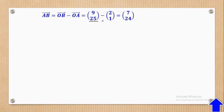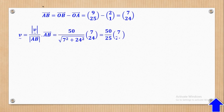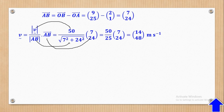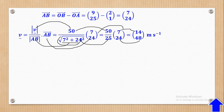AB equals OB minus OA. OB was (9, 25) and OA was (2, 1), so subtracting: 9 minus 2 gives 7, and 25 minus 1 gives 24. Now with direction vector (7, 24), we convert magnitude to vector form: velocity equals 50 over the square root of 7 squared plus 24 squared, times (7, 24). The square root simplifies to 25, so 50 over 25 is 2. Therefore 2 times 7 gives 14 and 2 times 24 gives 48. The velocity vector is (14, 48) meters per second.